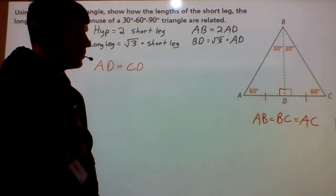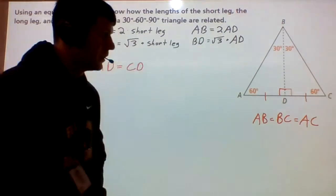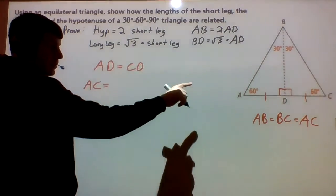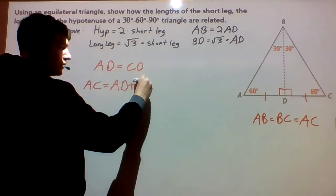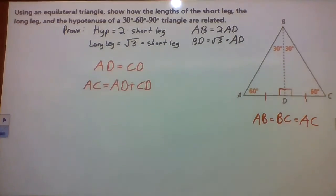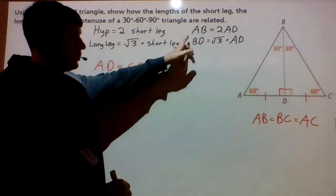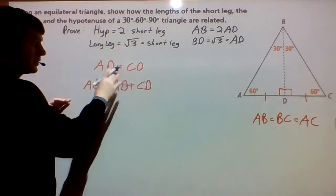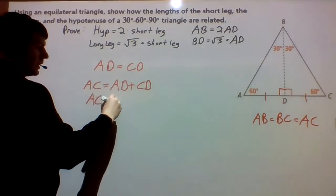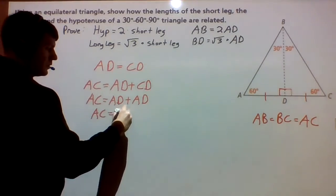We can set up an equation here. We know AD plus CD is going to equal the whole thing, which is AC — this is our segment addition postulate. So that whole piece AC is equal to the first piece AD plus the second piece CD. We know that AD equals CD, so we can substitute in AD for CD. That's going to get us: AC is equal to AD plus AD, which is 2 times AD.